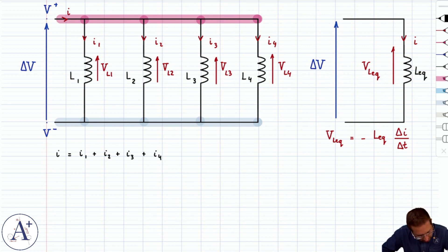Now if we do the following and we take the change delta I over delta T, well, we can claim that it's delta I1 over delta T plus delta I2 over delta T, and of course, so on and so forth.